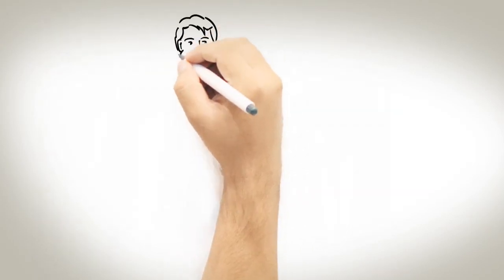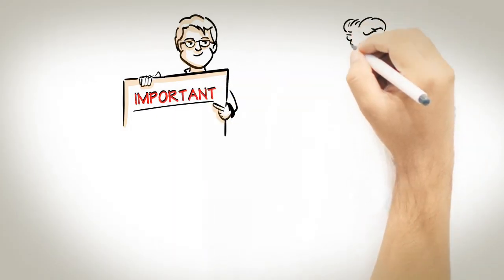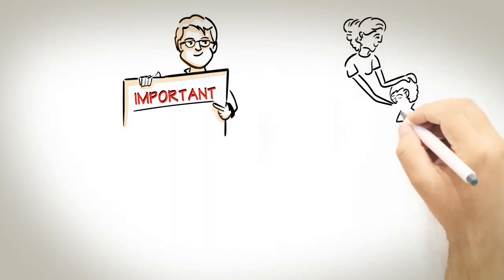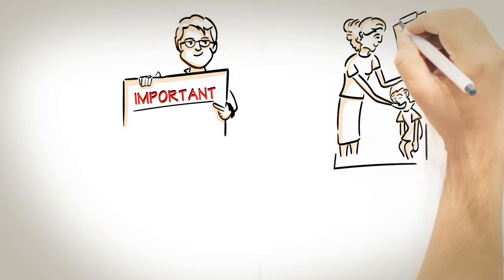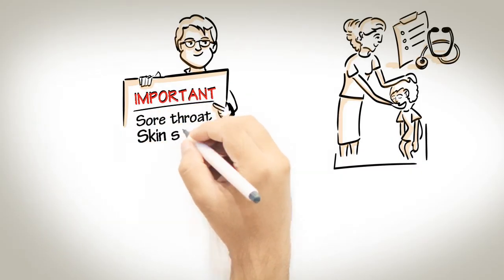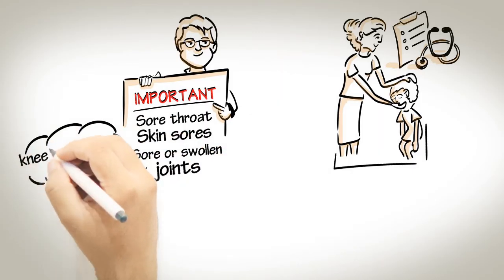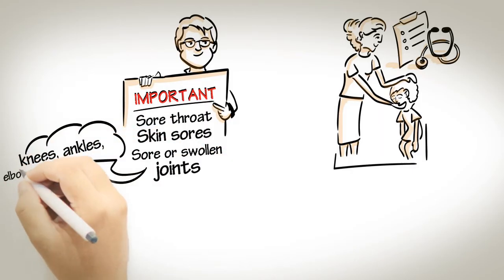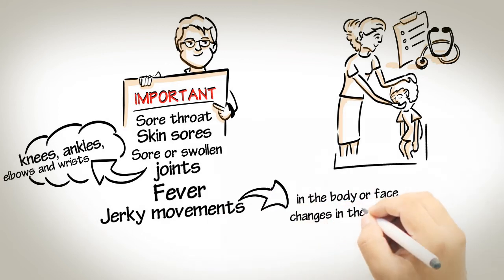Why do school staff need to know about this disease? School staff are well placed to identify children who are not well. Children with any of these symptoms should be seen by a health professional as soon as possible. Sore throat, skin sores, sore or swollen joints, particularly the knees, ankles, elbows and wrists, fever, jerky movements in the body or face, changes in the quality of writing or new difficulty walking.